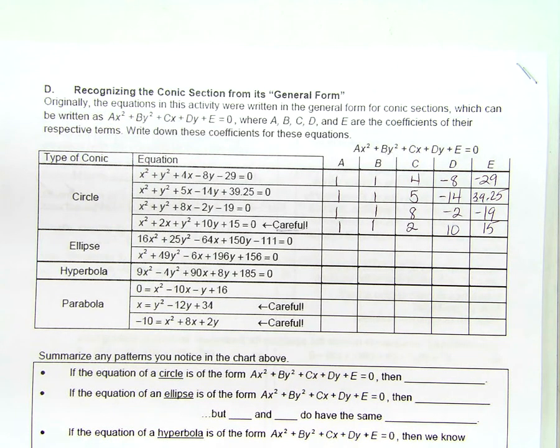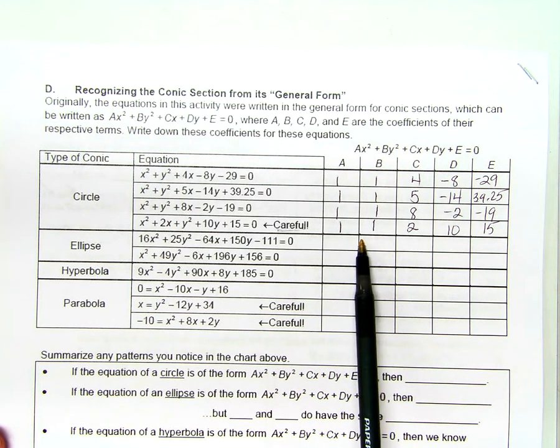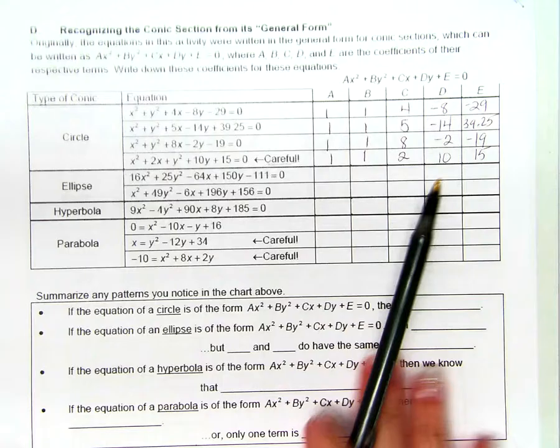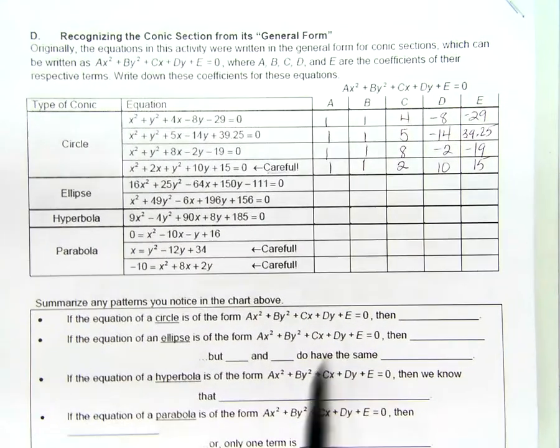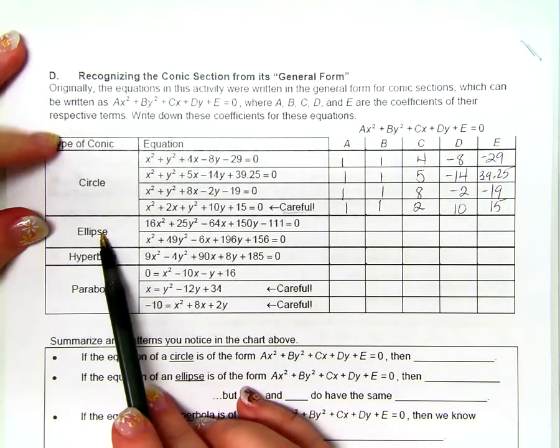What about the second equation? What's a? 1. What's b? 1. What's c? 5. What's d? Negative 14. And what's e? 39.25. What about the next one? What's a? 1. What's b? 1. What's c? 8. What's d? Negative 2. And what's e? Negative 19. Last one. What's a? 1. What's b? b is the one in front of the y squared. Look, it even tells you to be careful. Cuidado. 1, isn't it? What about c? 2. What's d? 10. And e? 15.